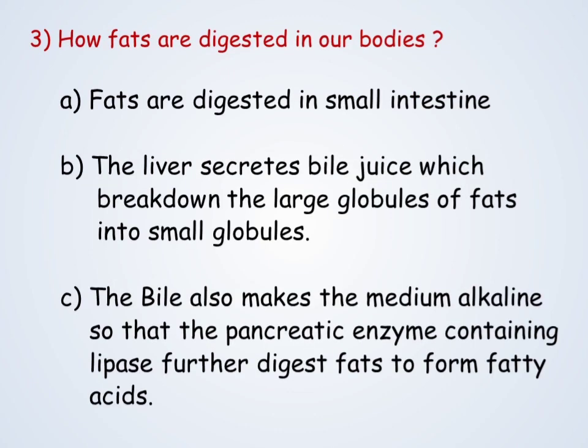How are fats digested in our bodies? Fats are digested in the small intestine. The liver secretes bile juice which breaks down the large globules of fats into small globules. Bile juice also makes the medium alkaline so that the pancreatic enzyme lipase can act on these fats to form fatty acids.